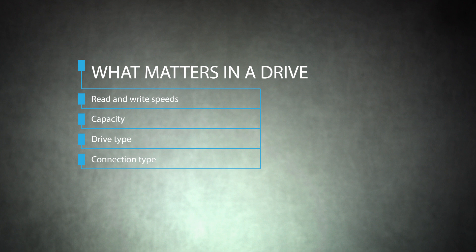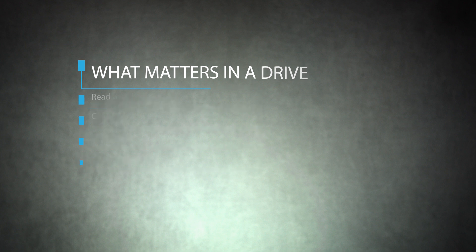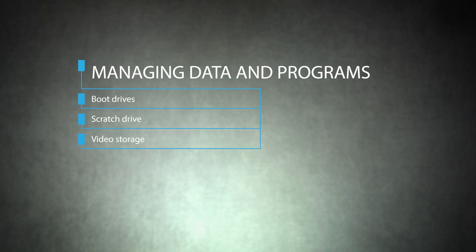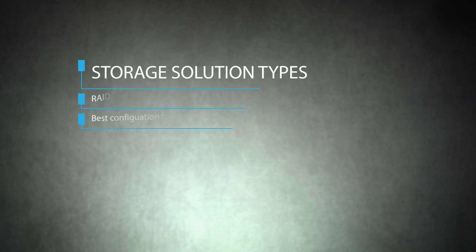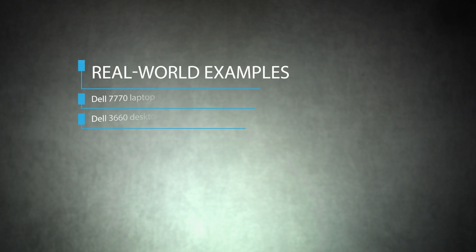In this video, we'll teach you how to choose the right storage options for your video editing computer to ensure optimal performance with redundancy, capacity, and capability. We'll start by identifying what matters when you choose a drive, from read and write speeds to capacity to drive and connection type. Next, we'll talk about managing data and programs on different system drives, including what to put on the boot drive, scratch drive, and main video storage. We'll also discuss RAID solutions and go over the best configurations for editing, ending with setup examples.